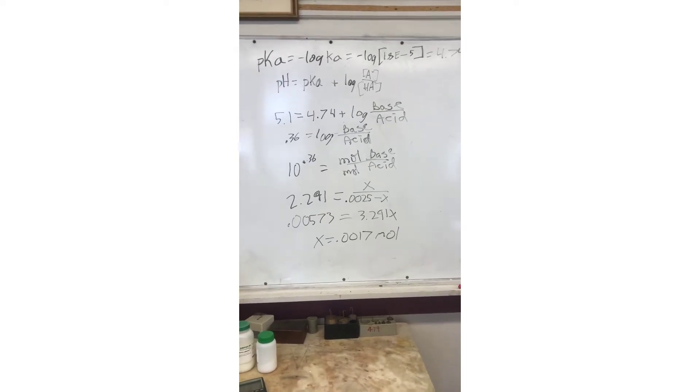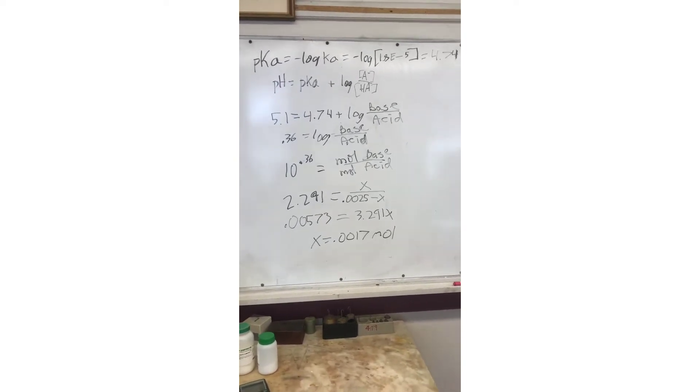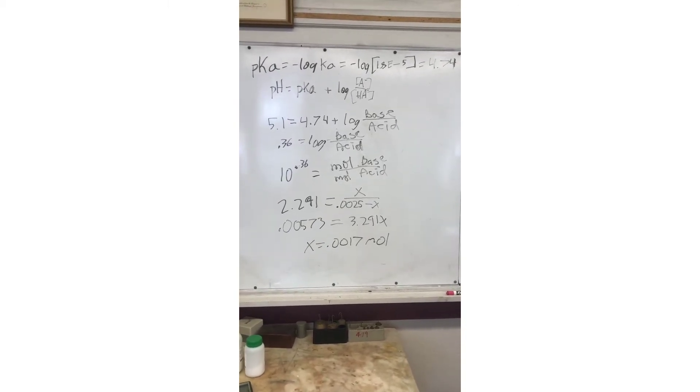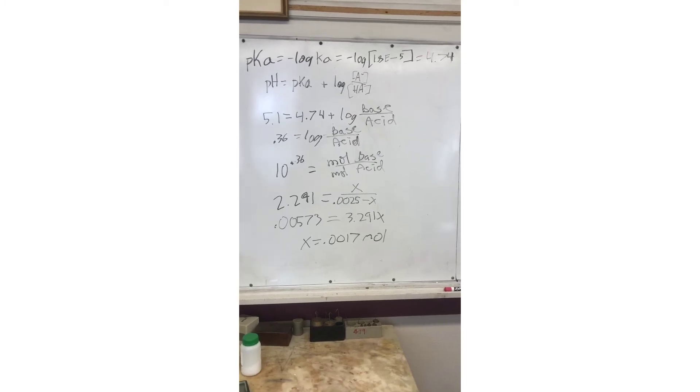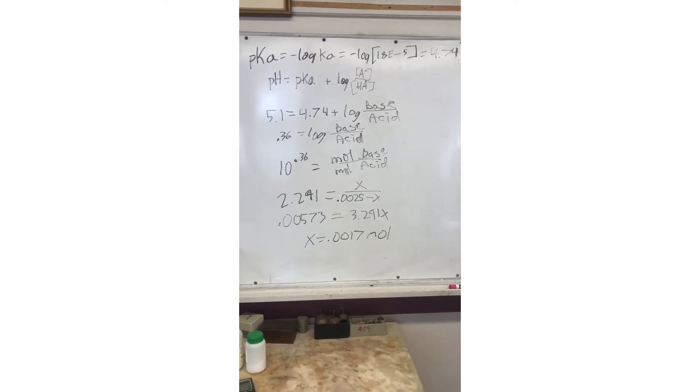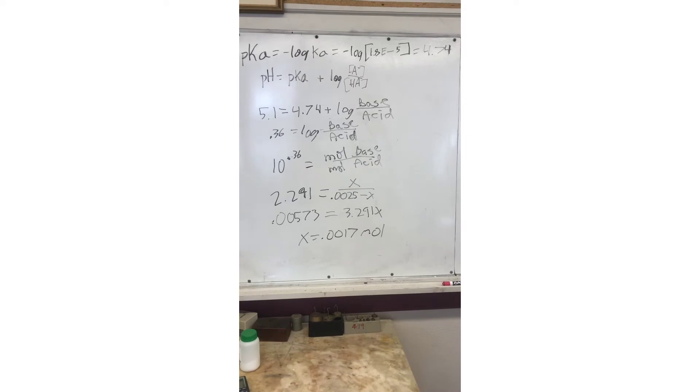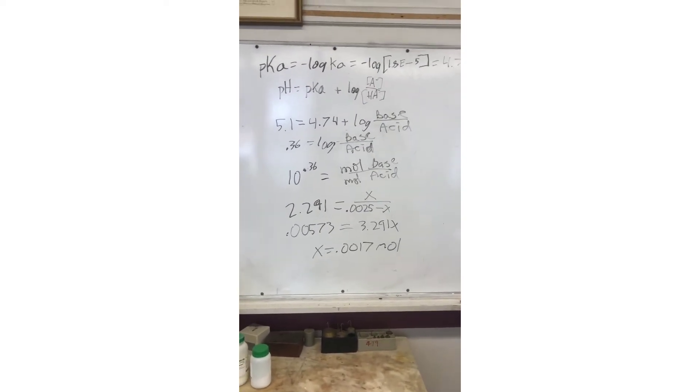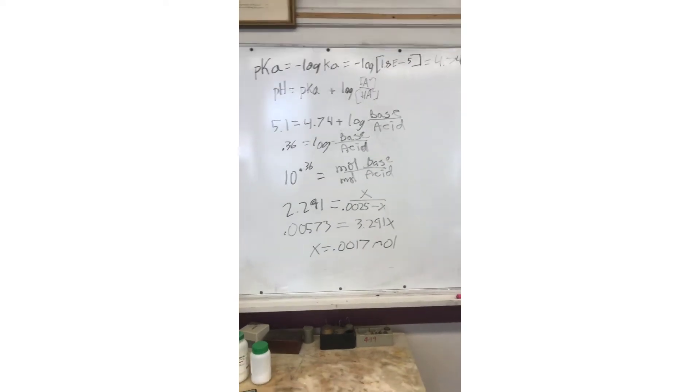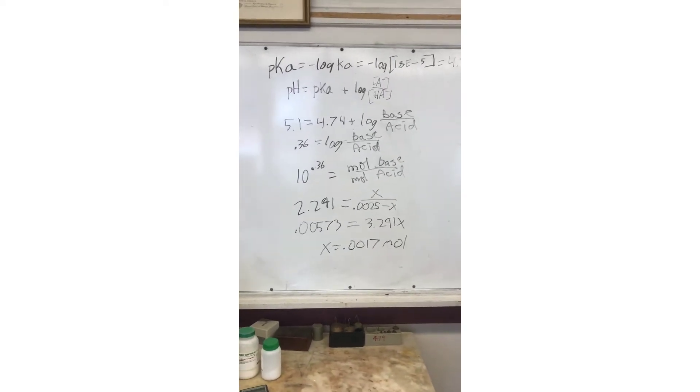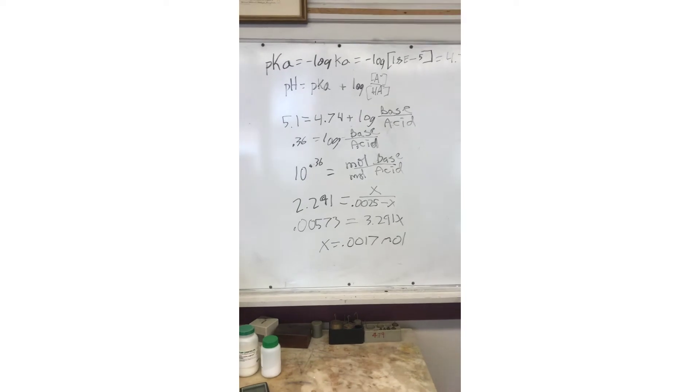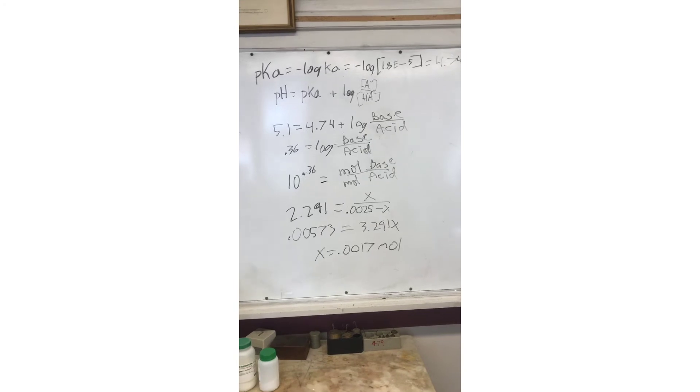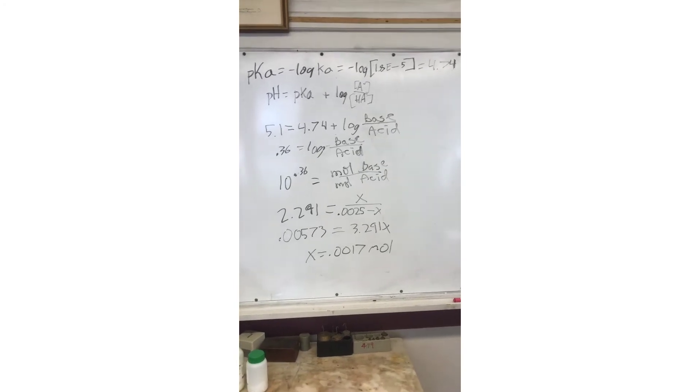We then take the anti-log and set 10 to the power of 0.36 to our ratio, and we find that 2.291 equals our ratio. Now we're going to put in the variables, which is x for base over our 0.0025 moles of acetic acid minus x. That x represents the base, and the loss of the acid, which is the minus x, is equal to the gain of the base. We find that our x equals 0.0017 moles of sodium hydroxide will be necessary to carry out our reaction.